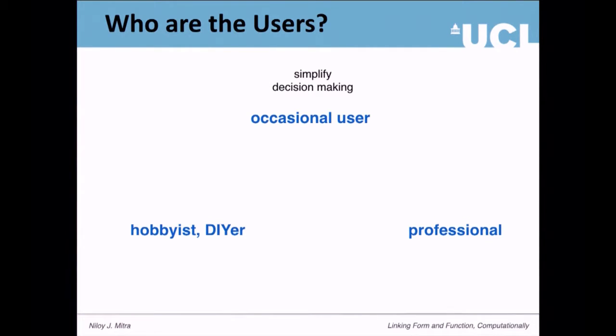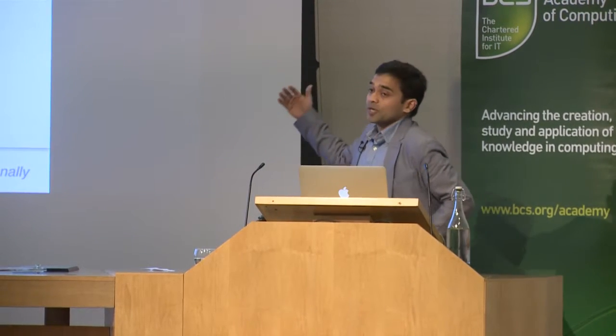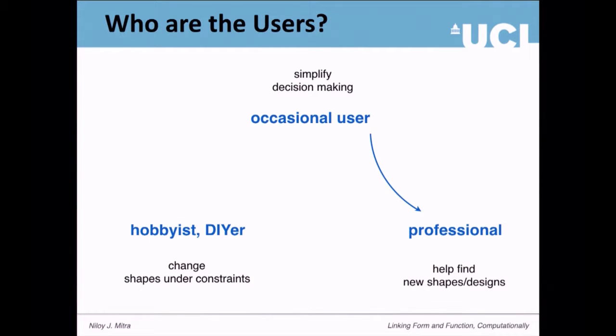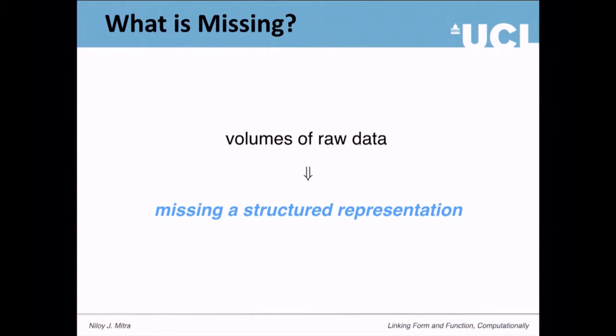For a user it's simply deciding which model to pick. For hobbyists, it's changing parameters to fit a design problem. For professionals, it's really about finding new shapes. There are also dialogues between these communities — for example, if you want to build a house, you involve an architect, you explain your design expectations, they design something, and then they convey back how realistic it is. To enable these interactions, we need something beyond raw data — an abstraction that allows a transaction or dialogue between different groups of people.